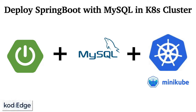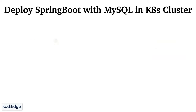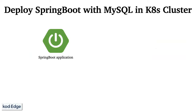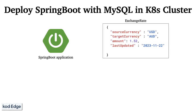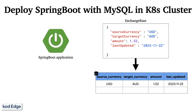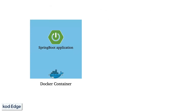Hello friends, welcome to Codage. In this session we will see how to deploy and run a Spring Boot application in the Kubernetes cluster with MySQL as a backend database. We will first create a Spring Boot application to store exchange rates into the MySQL database. Exchange rates are conversion rates of source and target currency at a particular date, with columns like source currency, target currency, amount, and last updated date. Once this is done, we will dockerize this application.